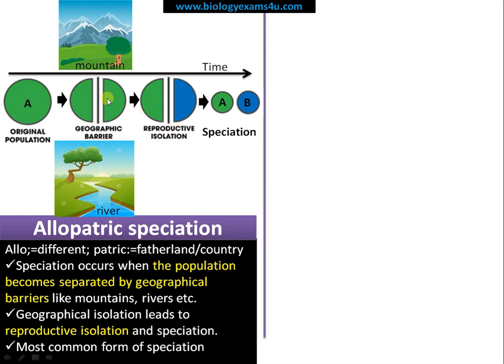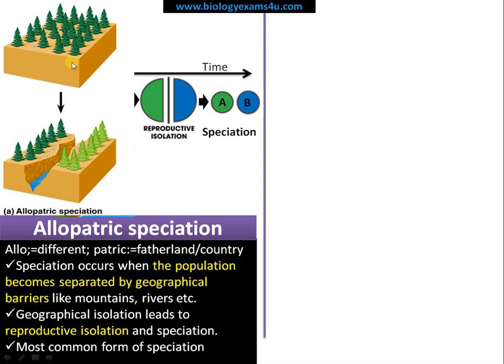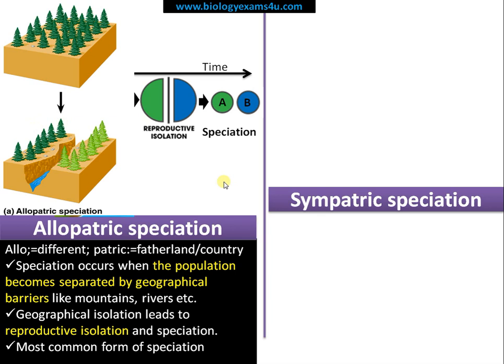Simply put, allopatric speciation occurs when a population is separated by geographical barriers like mountains or rivers. This geographical barrier leads to reproductive isolation, which later leads to speciation — the formation of new species. This is the most common method of speciation. You can see in this picture: a single species population, then a geographical barrier, and over time it becomes two species.